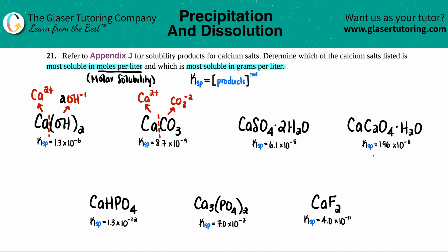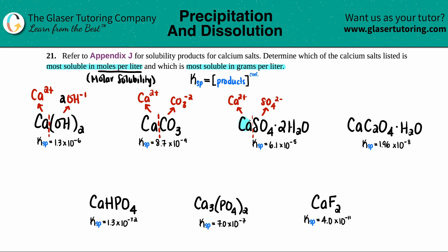Molar solubility only comes from the salt because water is a liquid and liquids do not go in your Ksp equation. For calcium sulfate, the break gives Ca²⁺ and SO₄²⁻ — sulfate is always 2−, one calcium and one sulfate, so it's already balanced. For the calcium oxalate hydrate, we only look at the ionic compound in front: C₂O₄ is oxalate, a polyatomic, giving Ca²⁺ and C₂O₄²⁻, one-to-one, no need to balance.